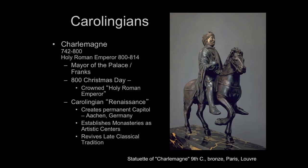It turns out the Pope had a problem: Lombards in northern Italy were pestering him, and he needed protection. Charlemagne had all the money and power but lacked a title. So he made a deal — the Pope declared him Holy Roman Emperor, giving him legitimacy. In return, Charlemagne agreed to give military protection to the Pope's territories and granted the Pope title to surrounding lands — the beginning of the papal states. This established the Holy Roman Empire, an attempt to recreate the Roman Empire.